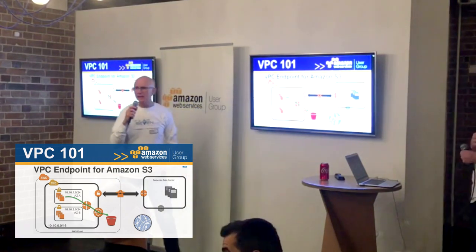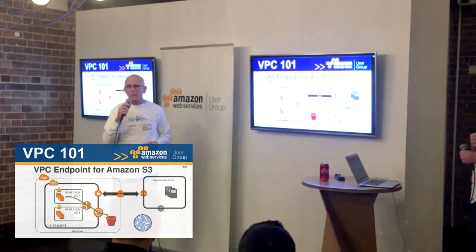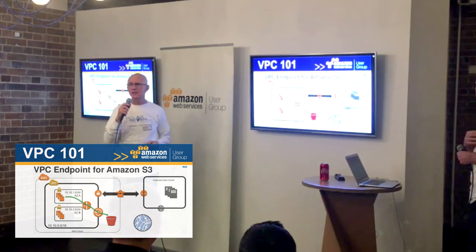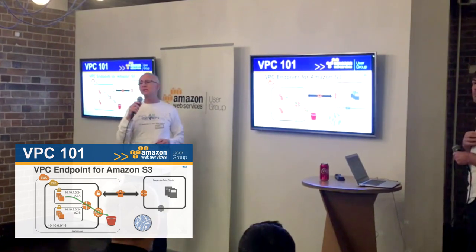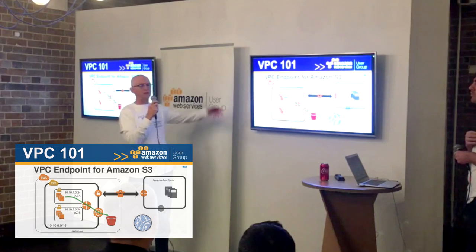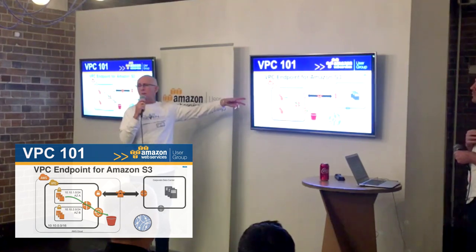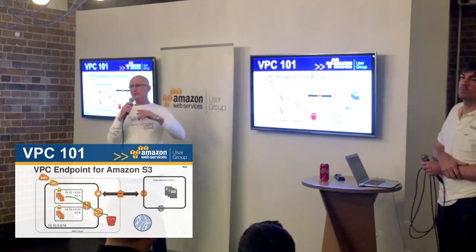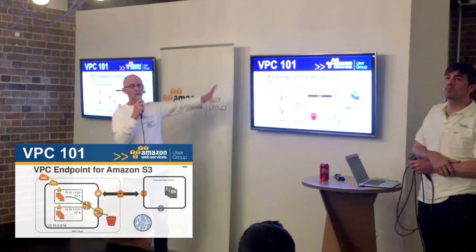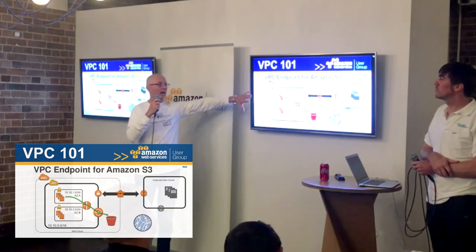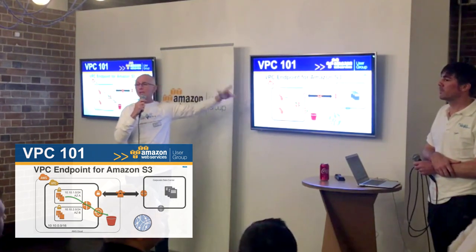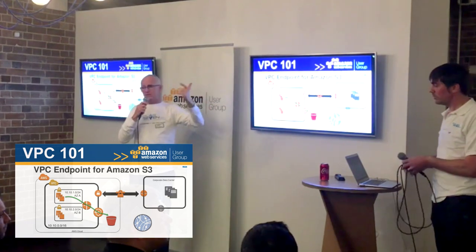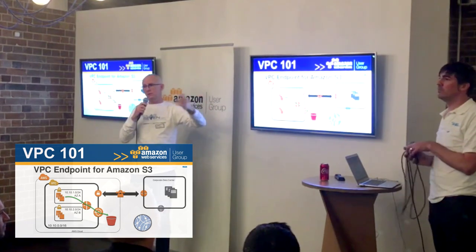NAT instance versus NAT gateway: one's managed by Amazon, and one you do yourself. What we'd do is have a CloudFormation script that sets all this up — our foundation services. It sets up all those networks: the subnets, the NAT gateway, and the VPN server. That would be the basis.